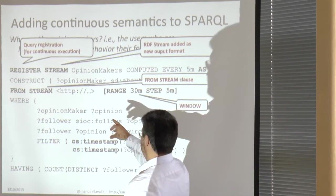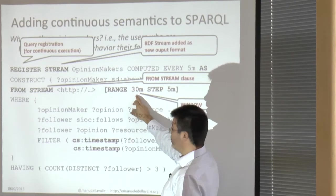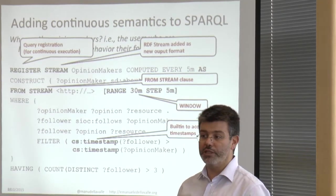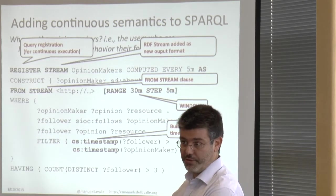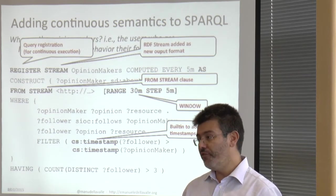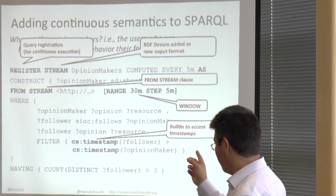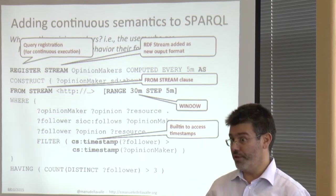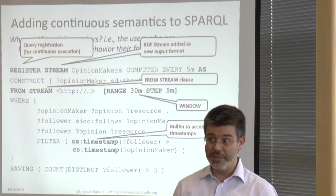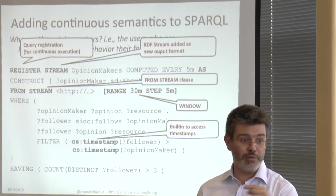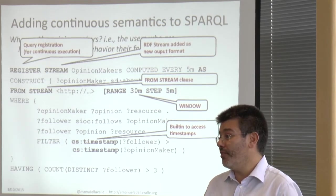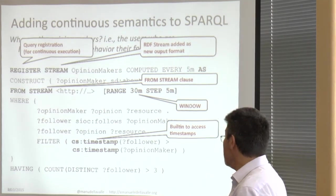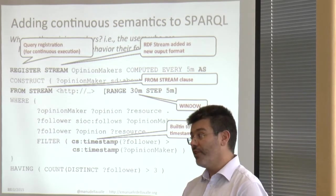We took an intermediate position between pure data stream management systems and complex event processing. In pure DSMSs you have no access to timestamps — and this was actually smart, because it enables a key optimization: every time you receive the same piece of information, it's a duplicate and you throw it away, reducing data dimensionality. But if you give access to the timestamp, you can enable complex event processing power. If you give access, a forwarded message is considered a new message with a new timestamp; without it, a renewed message in the window is simply the same message.